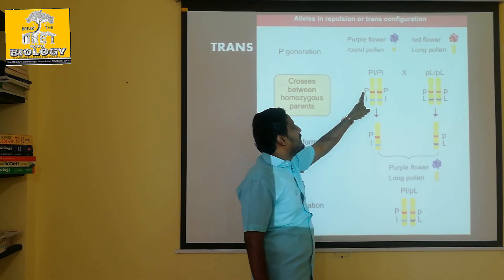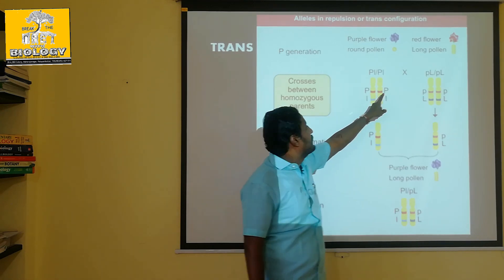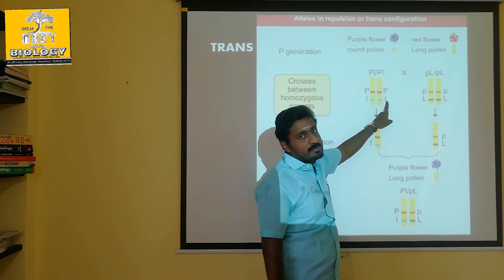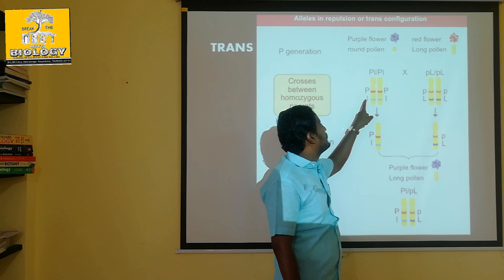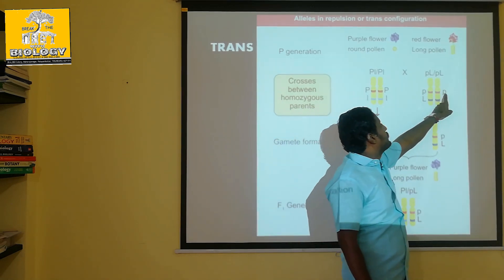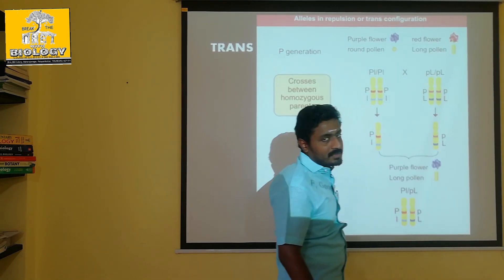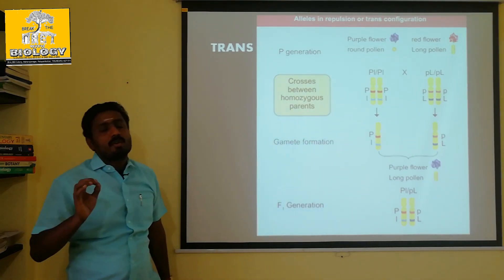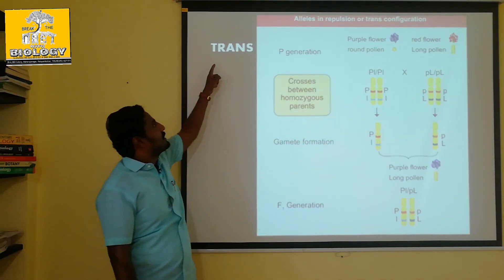This is a capital P, L. So capital P, capital P, small L, small L. That's why small p, small p, capital L, capital L — we are going to do the cross. If you do this cross, it is called Trans.